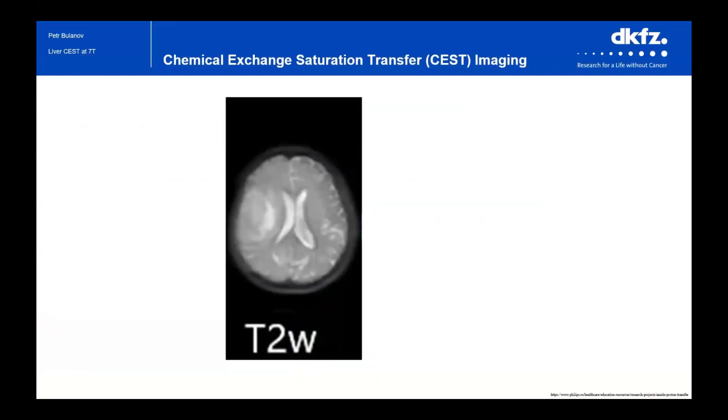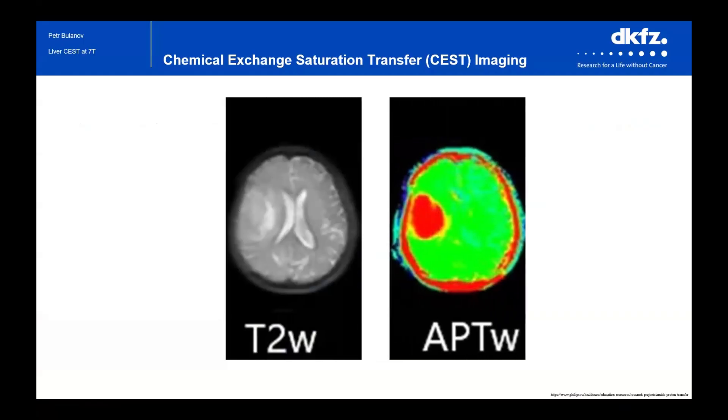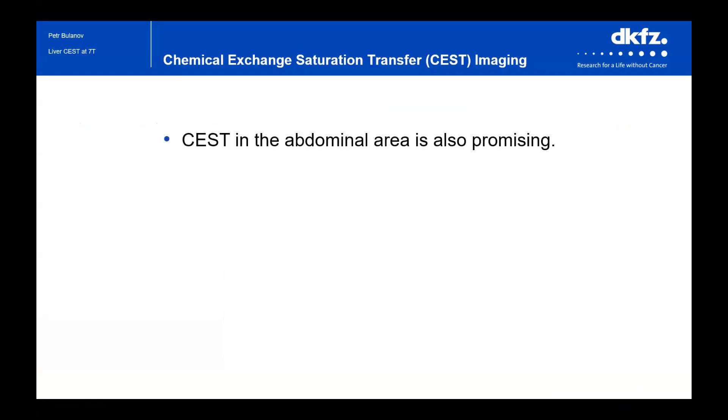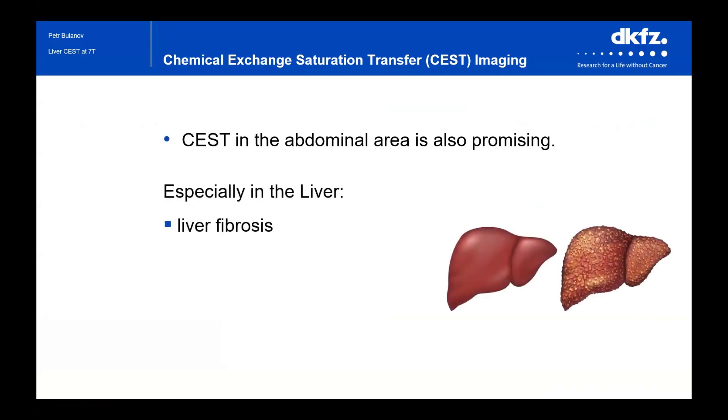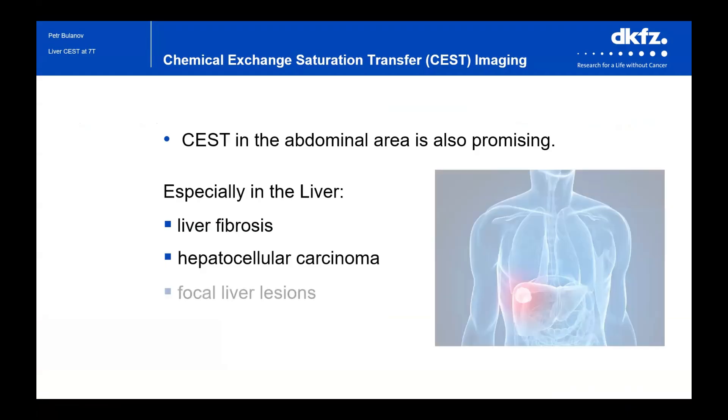CEST MRI is a promising technique to visualize tumors in the brain, but it is also promising in the abdominal area, especially in the liver, for diagnostics of liver fibrosis, hepatocellular carcinoma, focal liver lesions, and other pathologies.